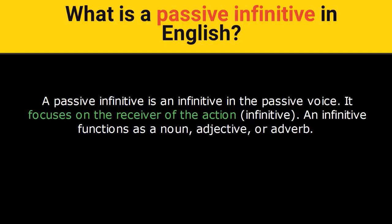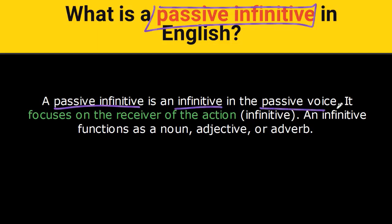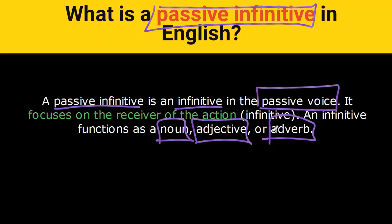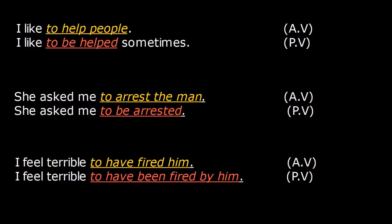A passive infinitive is an infinitive in the passive voice. An infinitive is a verb form that functions as a noun, an adjective, or an adverb. Since a passive infinitive is in the passive voice, it focuses on the receiver of the action — the person or the thing that receives the action of the infinitive.